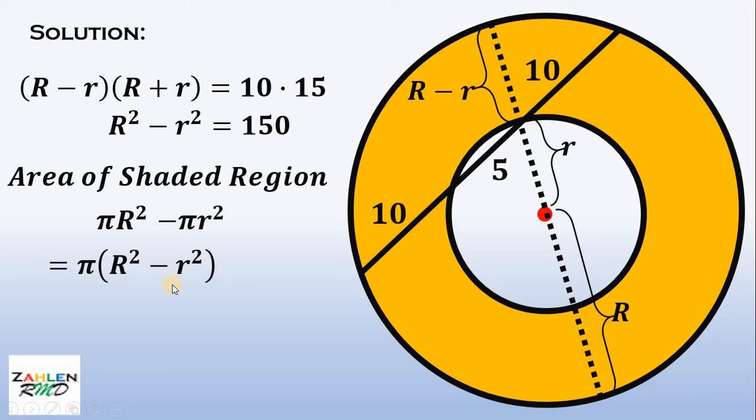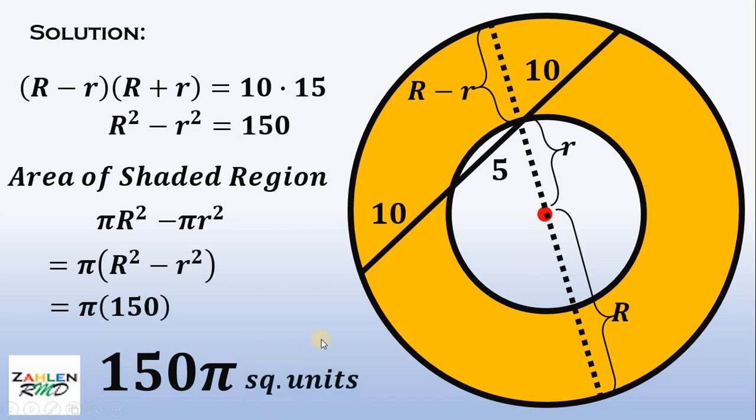We know the value of capital R squared minus r squared. It is equal to 150. Therefore, we can substitute the value of 150 to capital R squared minus r squared. Therefore, the area of the shaded region is simply 150π. Don't forget the unit. We have square units.